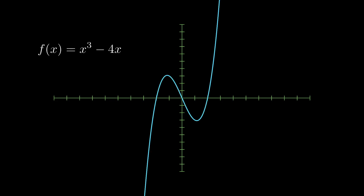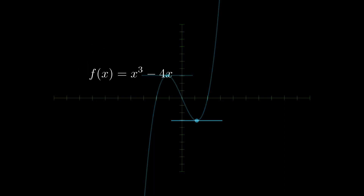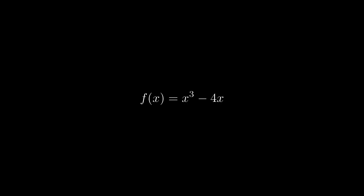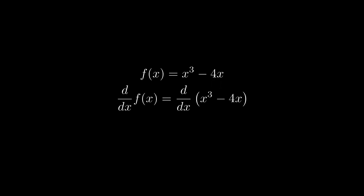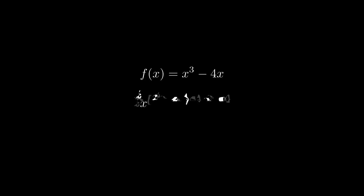In an introductory course on calculus, you may have learned how to find the extremum points of a one-dimensional function. The idea is simple: when a function hits a maximum or a minimum, the tangent curve to the function should be flat. Since the slope of the tangent curve is given by the function's derivative, we simply take the derivative and set it equal to zero. Solving for the independent variable then yields a set of stationary points — points where the tangent to the function has zero slope.